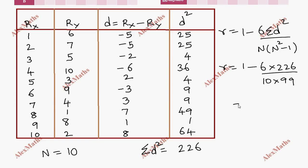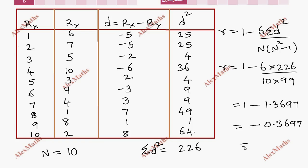That gives us 1 minus 1.3697. After subtraction, the result is minus 0.3697, which rounded off is approximately minus 0.37.